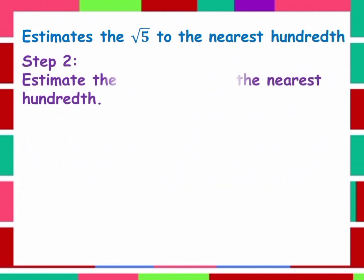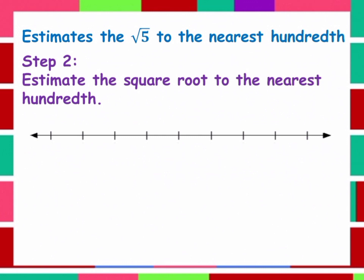After finding the two consecutive perfect squares, proceed to Step 2: estimate the square root to the nearest hundredth. We already know that the square root of 5 is between 2 and 3. I have here a number line. I'm going to plot the square root of 4 and the square root of 9. The square root of 4 is equal to 2, and the square root of 9 is equal to 3, and in between is the square root of 5 and other numbers.